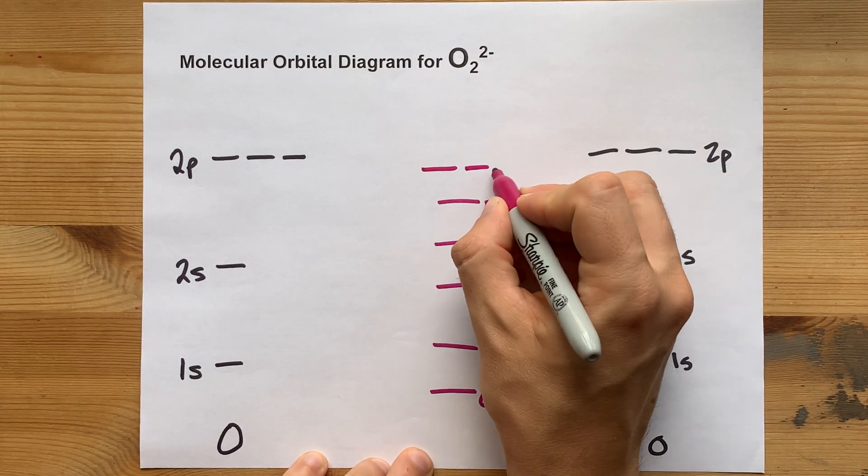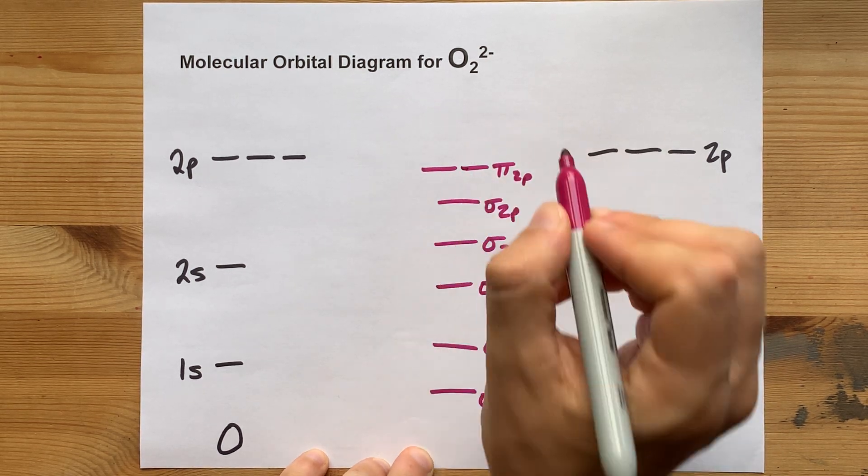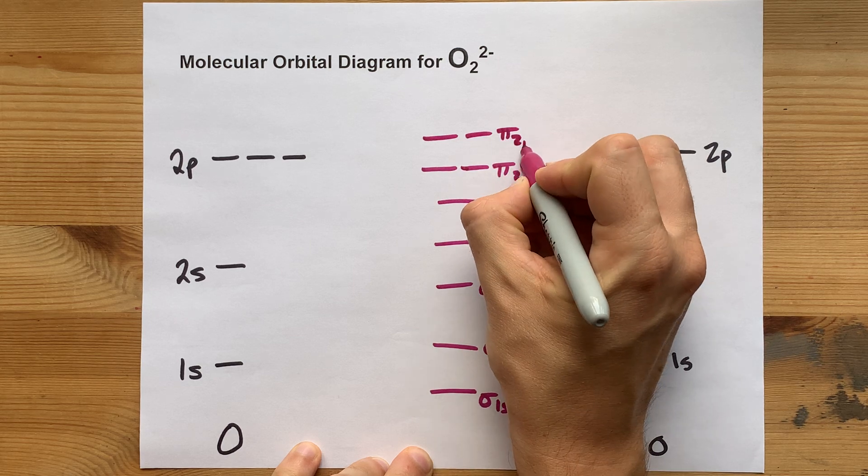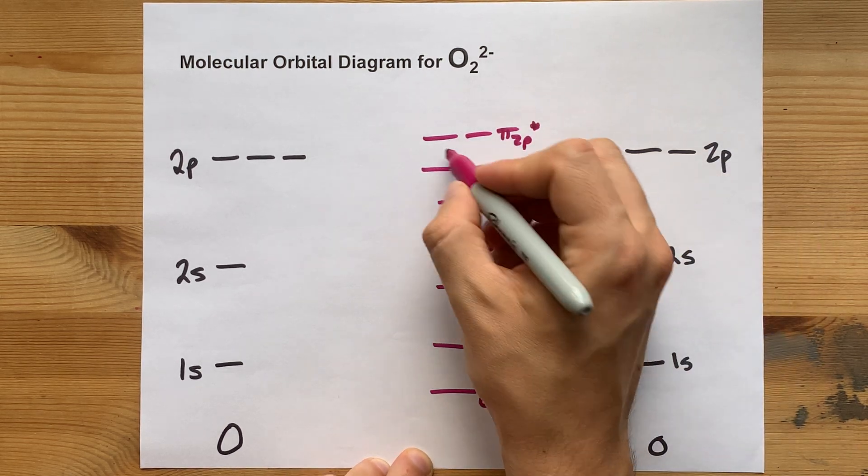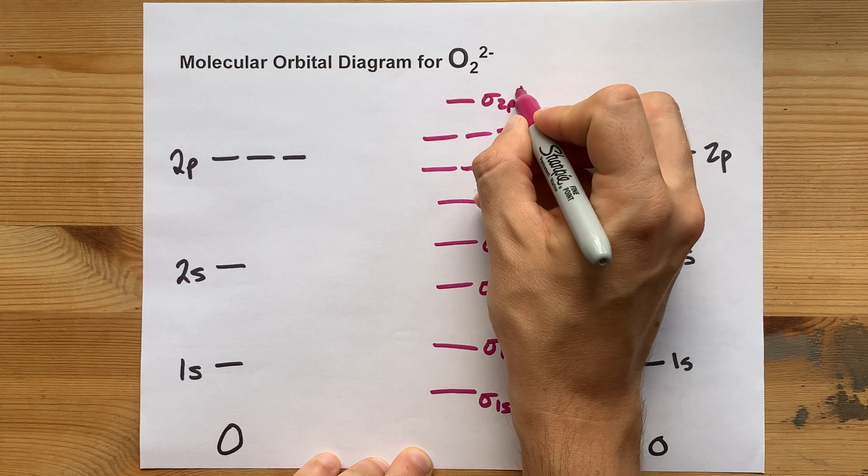Then you have pi 2p bonding orbitals, and there are two of them. Pi 2p antibonding orbitals, two of those as well, and a sigma 2p antibonding orbital.